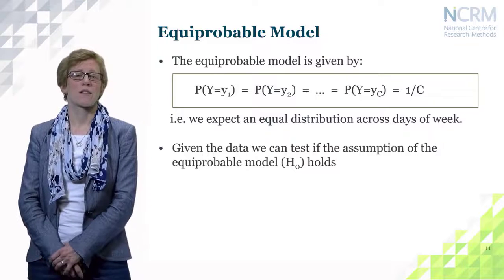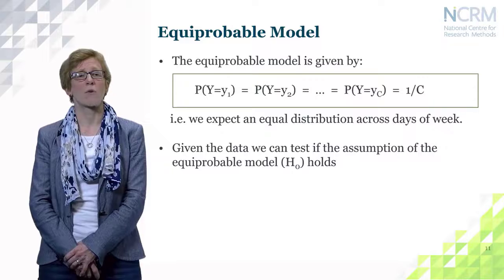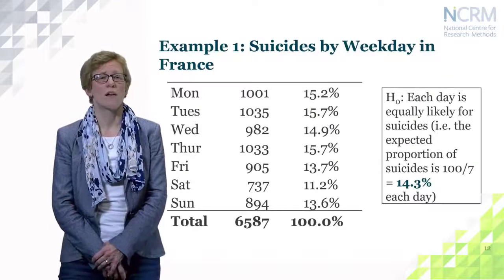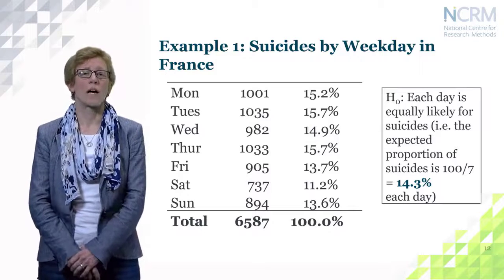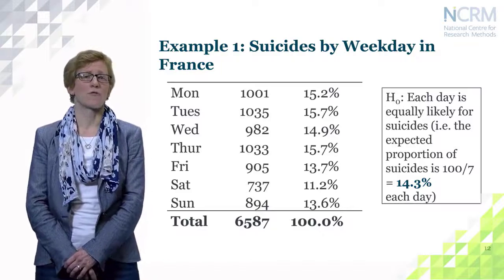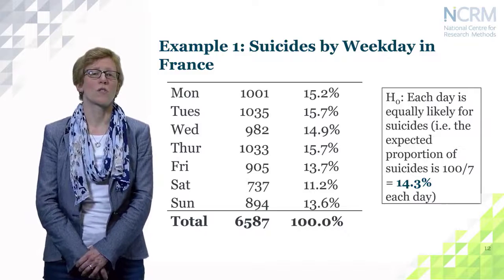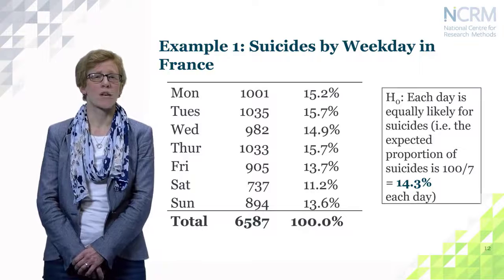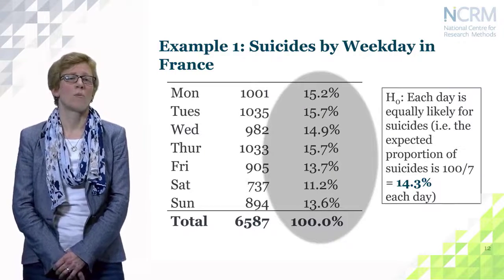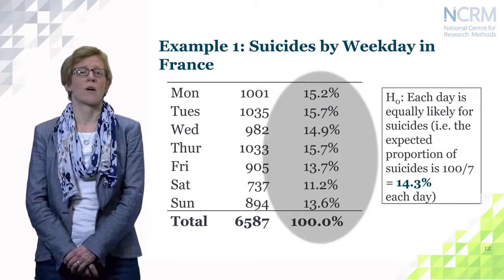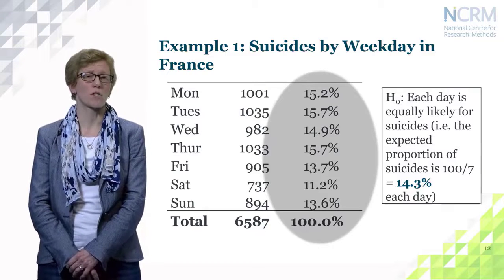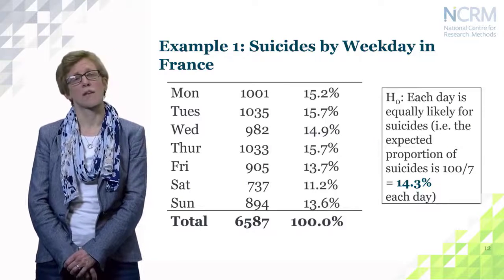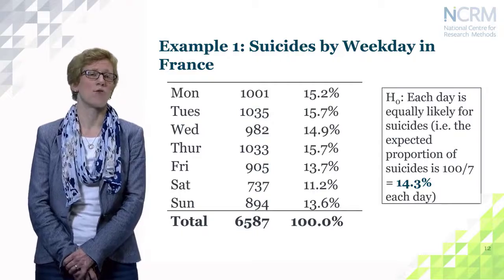Given this data, we can test the assumption of the equiprobable model — H0 that this assumption holds. For suicides by weekday in France, H0 means each day is equally likely for suicides to happen, so the expected proportion is 100 over 7, just over 14% per day. Looking at the observed distribution in the table, it diverges a little from 14% per day, but the divergence may not be large. To assess this properly, a formal test is needed, which I'll discuss in the next session.